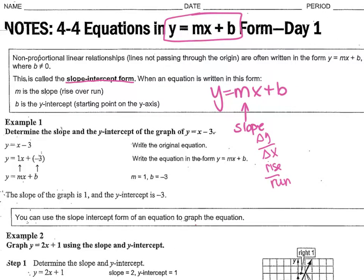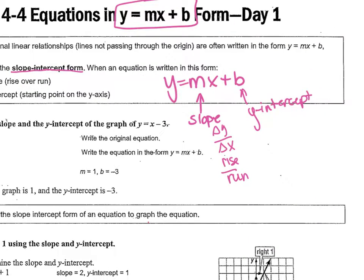And so the b represents your y-intercept, which means it's where your slope line crosses the y-axis. And which one is the y-axis? The vertical one.